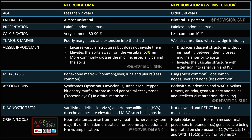Vessel involvement: neuroblastoma encases vascular structures but does not invade them. It elevates the aorta away from the vertebral column — the 'floating aorta' sign. Neuroblastoma most commonly crosses the midline behind the aorta. Nephroblastoma displaces adjacent structures, crosses the midline anterior to the aorta, and invades vascular structures — typically invading the renal vein and IVC.